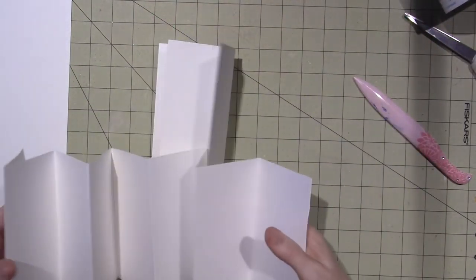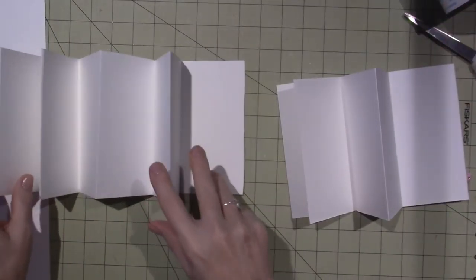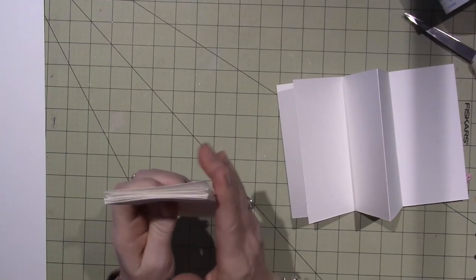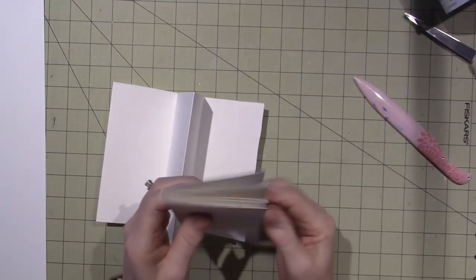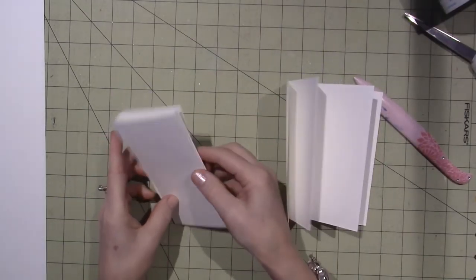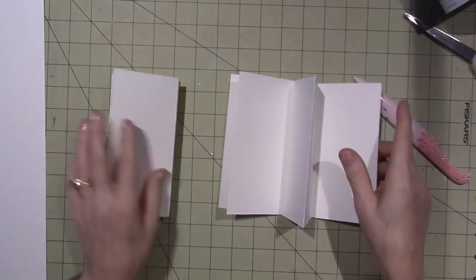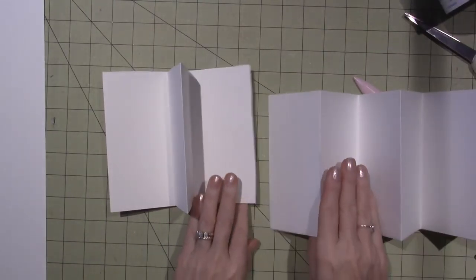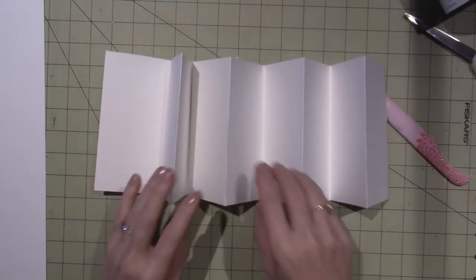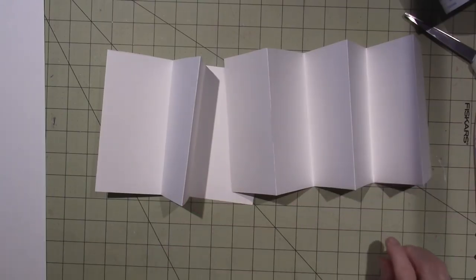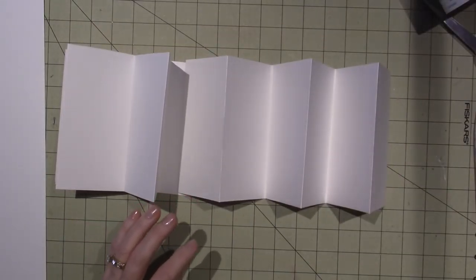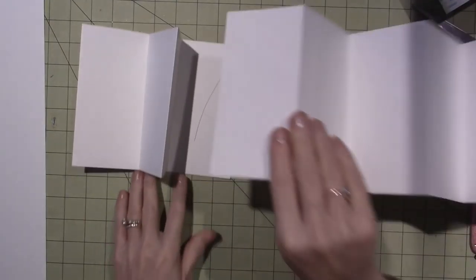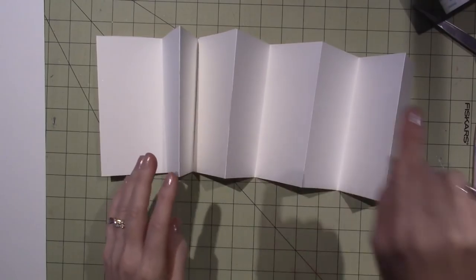See how I rip the paper because I'm so rough when I score it? Just be gentle. Now we have this accordion fold to create our pages. I'm just going to add this to what I already have. Each peak is going to be where we connect our pages, so this is going to be the binding back here.